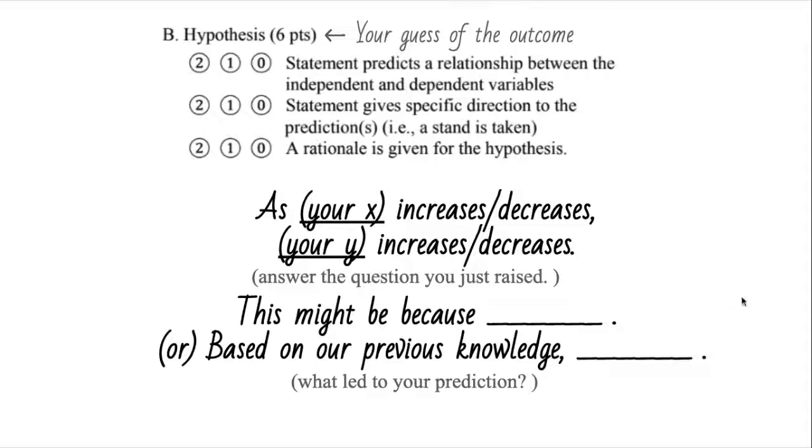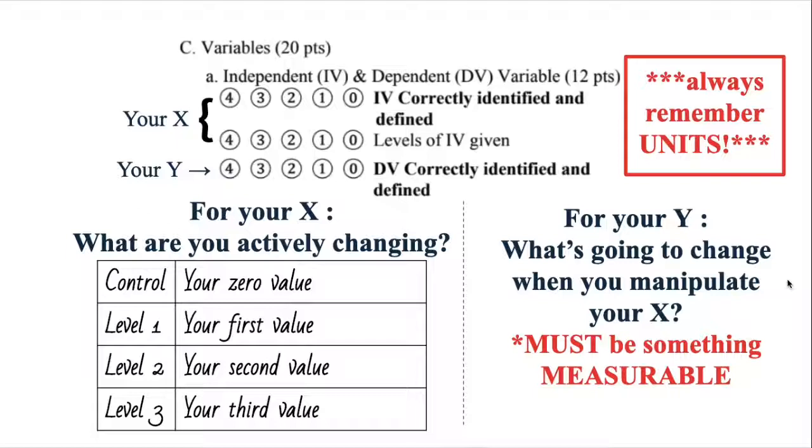And then third is variables. I want to spend a little more time on this one. Variables are split into two sections, independent and dependent variables, that things are going to change, and then constants and some controlled variables. Your x is your independent variable. They call it IV over here. So here's what you need to do. You need to find what you're changing and then state them, and then also give out the levels of IV.